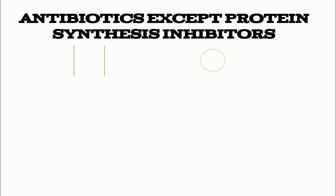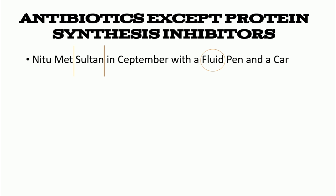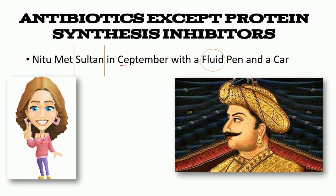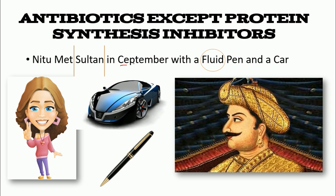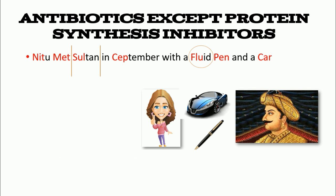The first sentence is a story regarding Neetu and a Sultan, bringing some gifts: 'Neetu met Sultan in September with a fluid pen and a car.' September is spelled wrong intentionally. So Neetu bought a fluid pen and a car to gift to the Sultan. Now let's look at the actual part so it makes some sense.